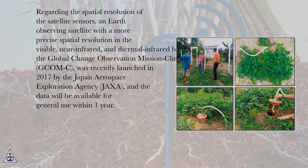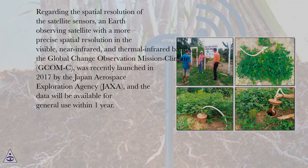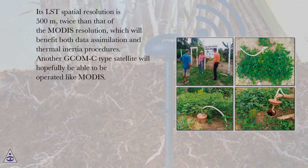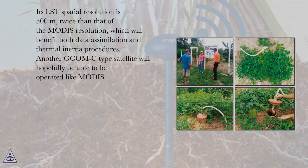Regarding the spatial resolution of satellite sensors, an Earth-observing satellite with more precise spatial resolution in the visible, near-infrared, and thermal infrared bands — the Global Change Observation Mission Climate, GCOM-C — was recently launched in 2017 by the Japan Aerospace Exploration Agency, JAXA, and the data will be available for general use within one year. Its LST spatial resolution is 500 meters, twice that of the MODIS resolution, which will benefit both data assimilation and thermal inertia procedures. Another GCOM-C-type satellite will hopefully be able to be operated like MODIS.